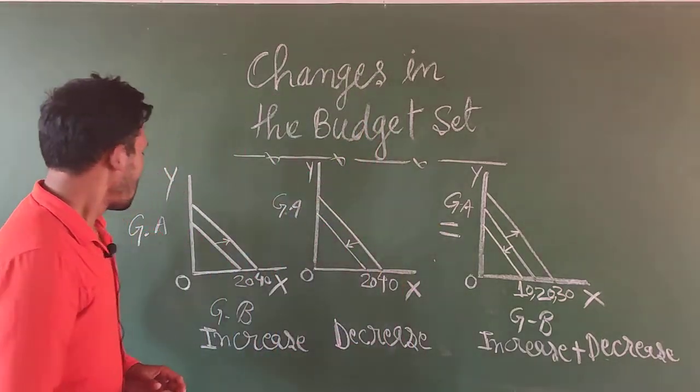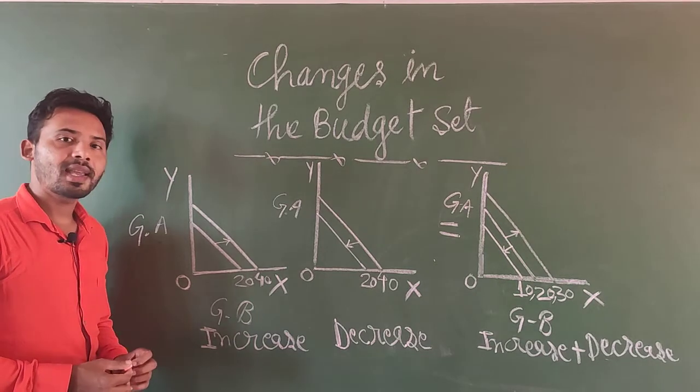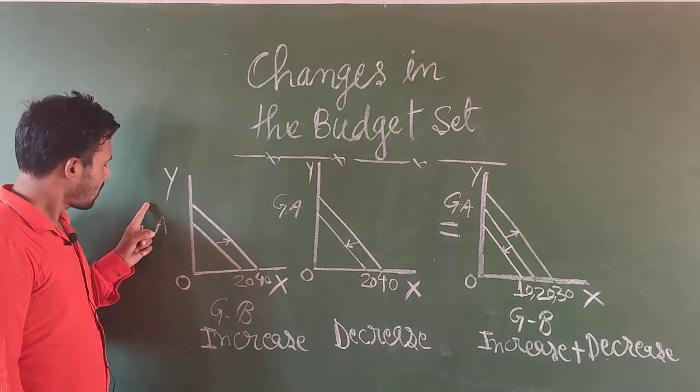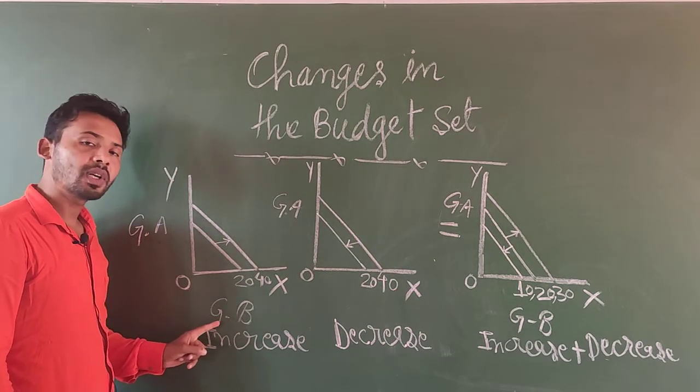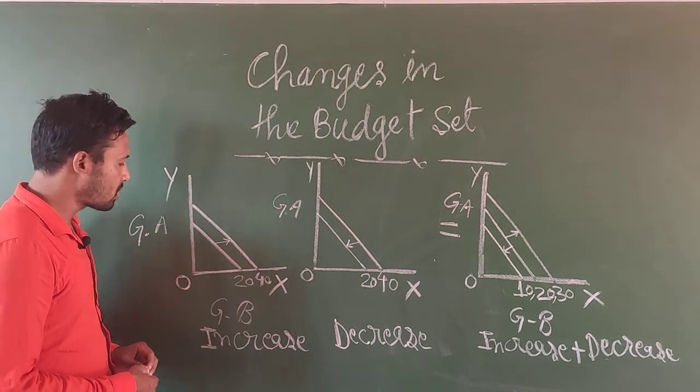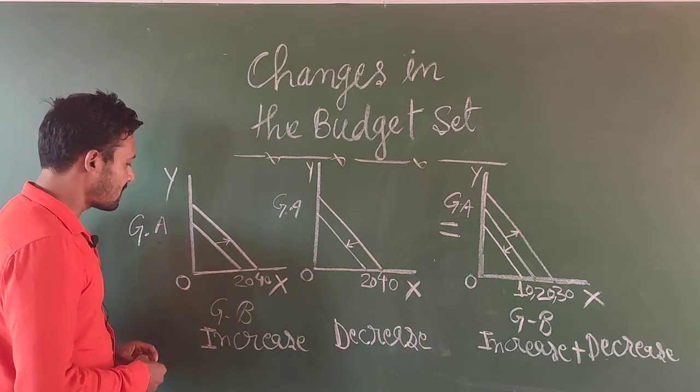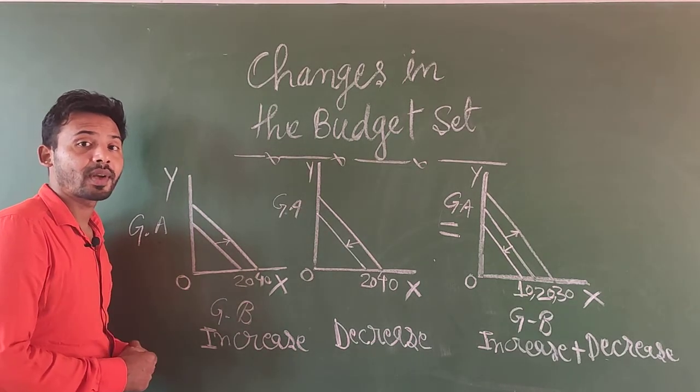Now here in this graph we will discuss about the increase in our budget. In the y axis we have good A and in the x axis we have good B. Suppose our budget is originally given to us rupees 20.